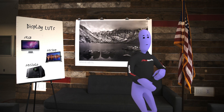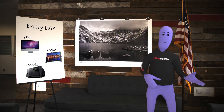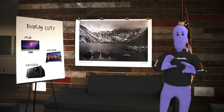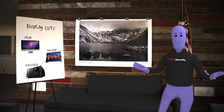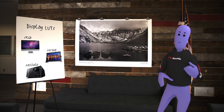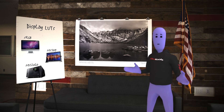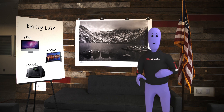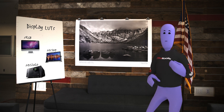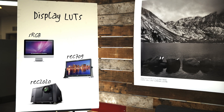Now, if you're viewing on a computer monitor, that's almost always an sRGB LUT. If it's a standard broadcast monitor, it'll most likely be REC 709. And if it's an HDR monitor, it could be REC 2020 or any number of proprietary LUTs. We'll leave it up to you to figure that out.